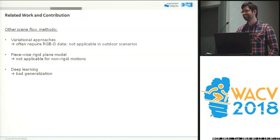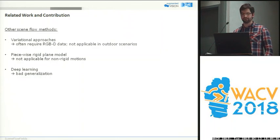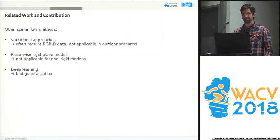Lately some methods use semantic segmentation to aid the motion estimation process, but those generalize poorly to unseen data and even worse to different domains.